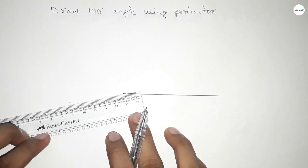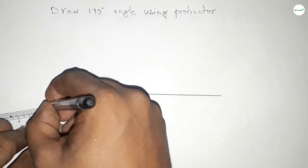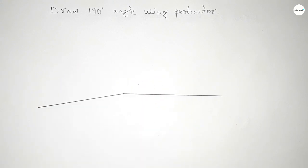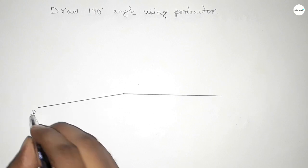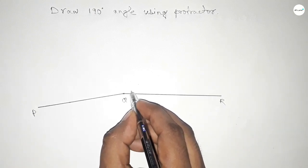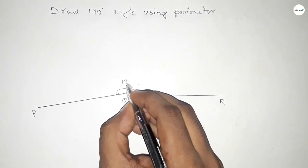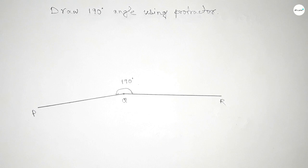By adding extra 10 degree with 180 degree, we got 190 degree. So this is P, Q, and R. So angle PQR is 190 degree. Therefore angle PQR equals...